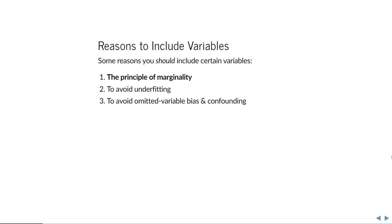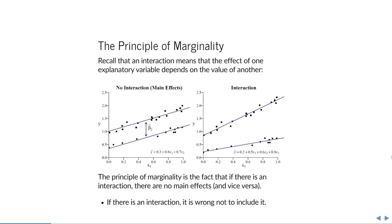The first reason we're going to discuss is called the principle of marginality — a reason why you should include certain variables. The principle of marginality has to do with interactions. An interaction means that the effect of one explanatory variable is dependent on the value of another explanatory variable.